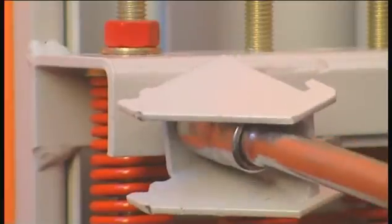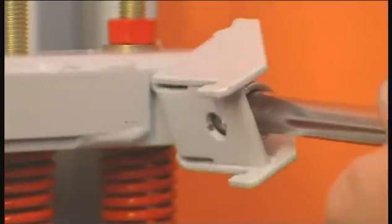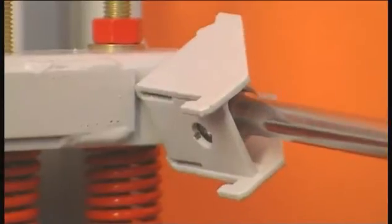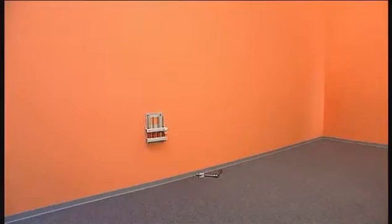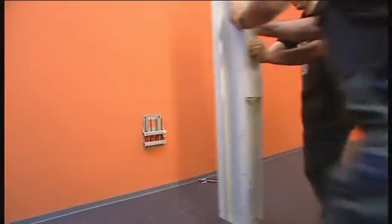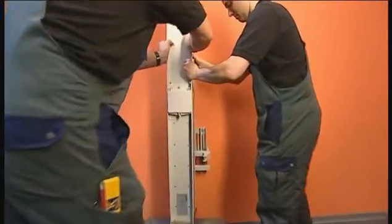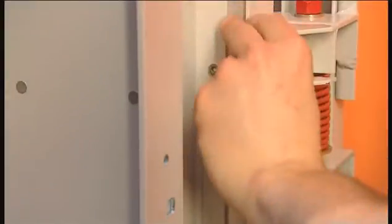One of the two guide elements is removed while the other is only loosened. The LX trunking unit is now mounted on the prepared spring bracket and secured by tightening the guide elements.